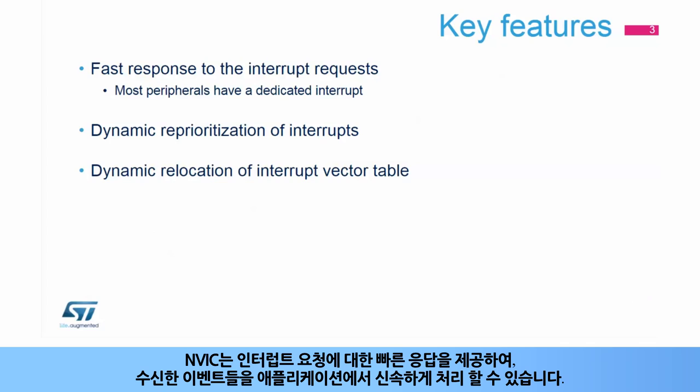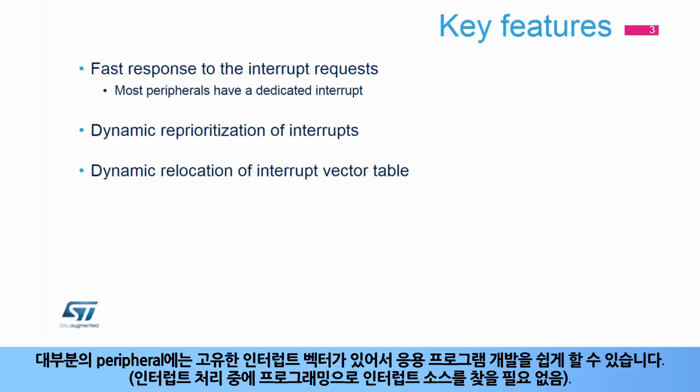The NVIC provides a fast response to interrupt requests, allowing an application to quickly serve incoming events. Most of the peripherals have a unique interrupt vector, making development of the application easier with less need to programmatically determine the source of an interrupt during processing.